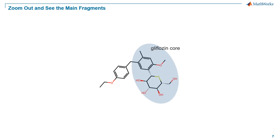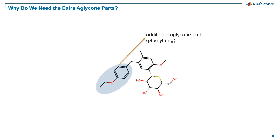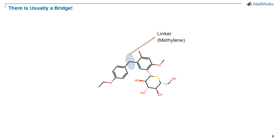Now let's zoom out on this structure. This molecule is designed in three fragments. First, we have the gliflozin core — this part consists of a glucose moiety and a phenyl ring, and as we'll see later, this core structure repeats in other gliflozin candidates as well. The other non-glucose part of this molecule, generally called the aglycone, is the highlighted part; these segments usually have some aromatic rings in them. Finally, we have the linker that bridges the two parts of the molecule — in this case, the linker is a simple methylene group.